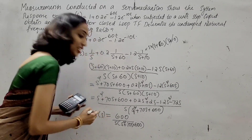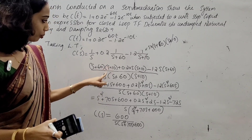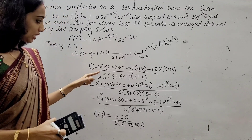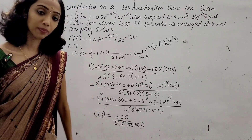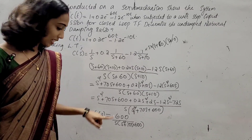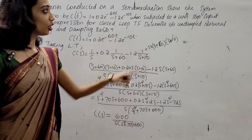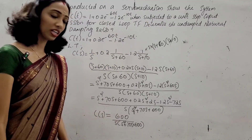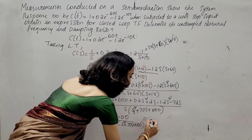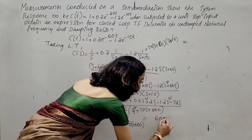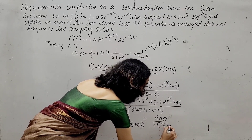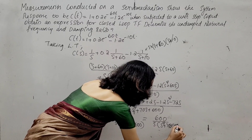After performing all the multiplications and simplifications, C(s) = 600 / [S(S² + 70S + 600)]. The denominator contains S and S² + 70S + 600.